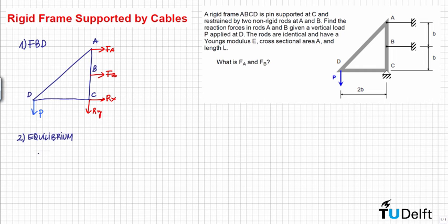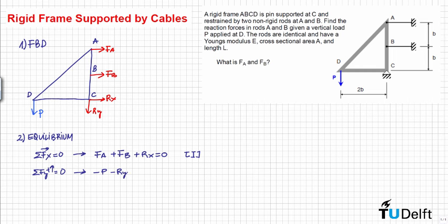First, we have that the sum of forces in the horizontal direction is equal to zero — this is our first equation. We also have that the sum of forces in the vertical direction is equal to zero, and from here we directly obtain that Ry is equal to minus P. This is our second equation.